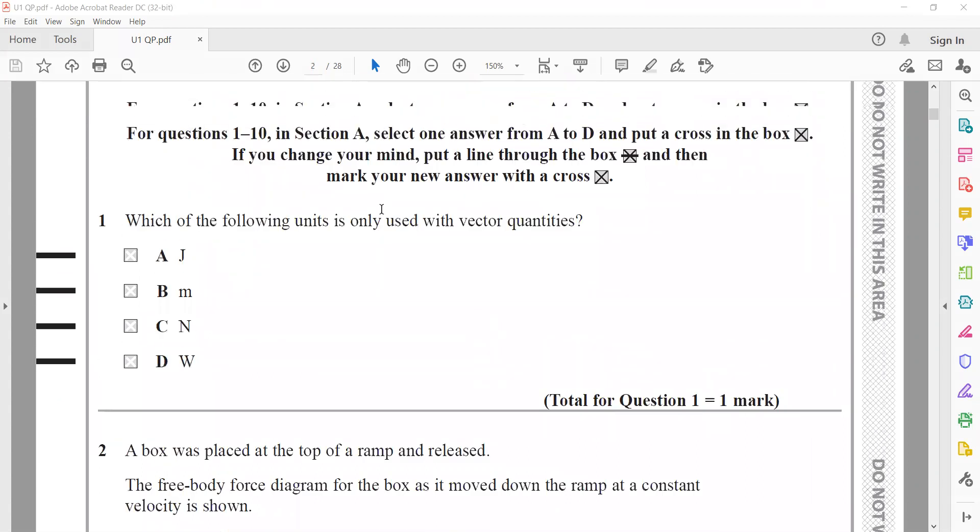The first question: which of the following units is only used for vector quantities? Joule is only for scalar, meter can be scalar like distance or vector like displacement. Newton is always a vector, and watt which is a unit of power is scalar. So Newton can only be used for vector quantity.